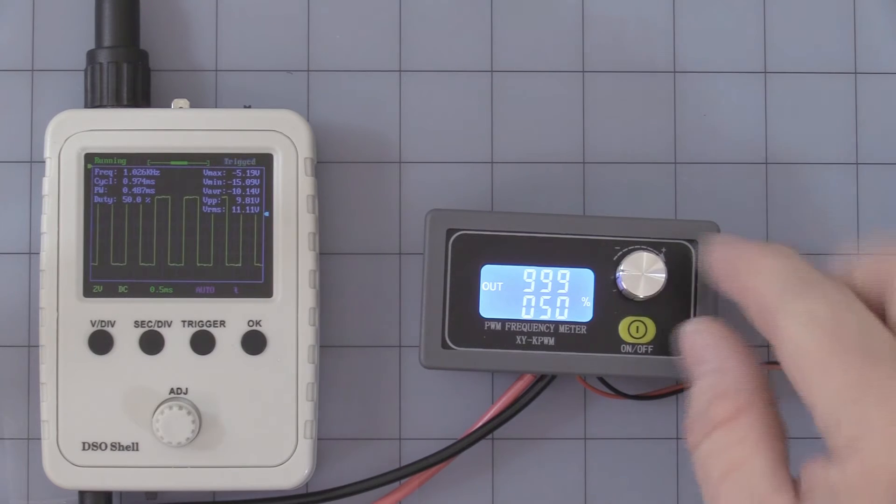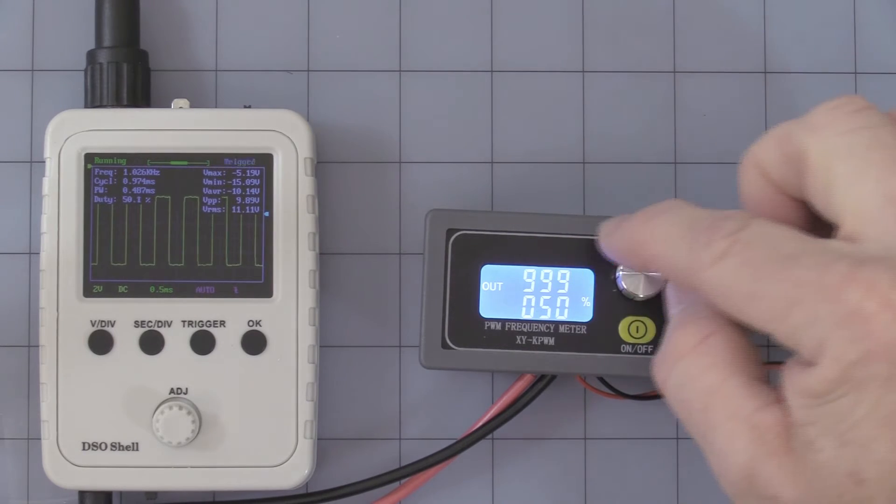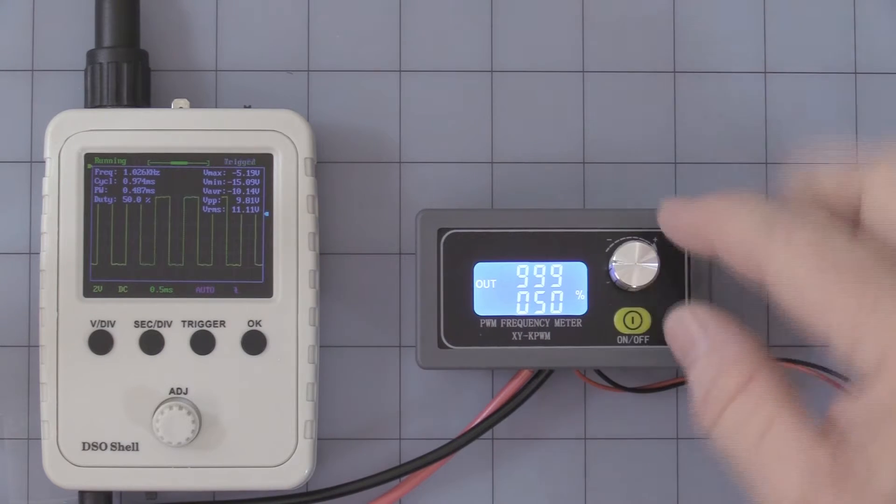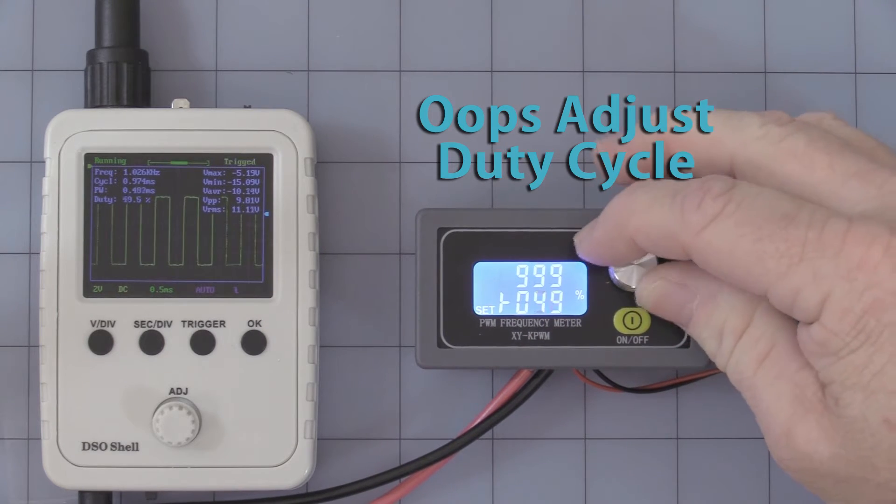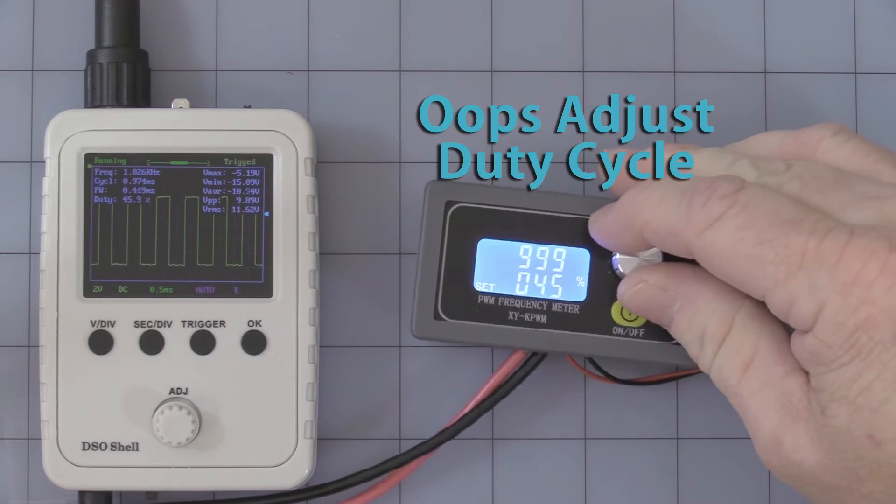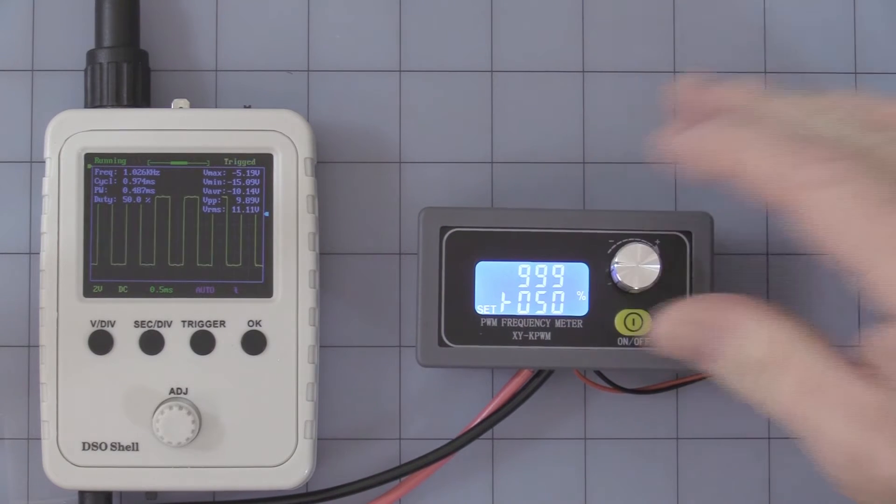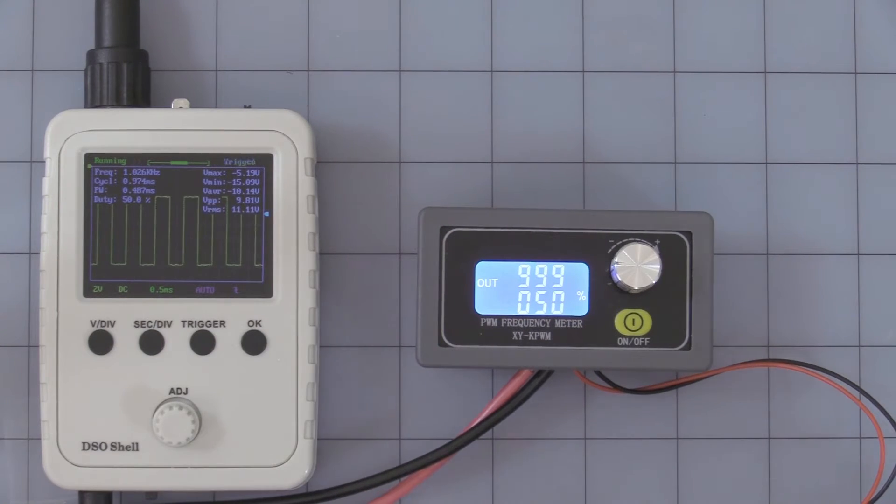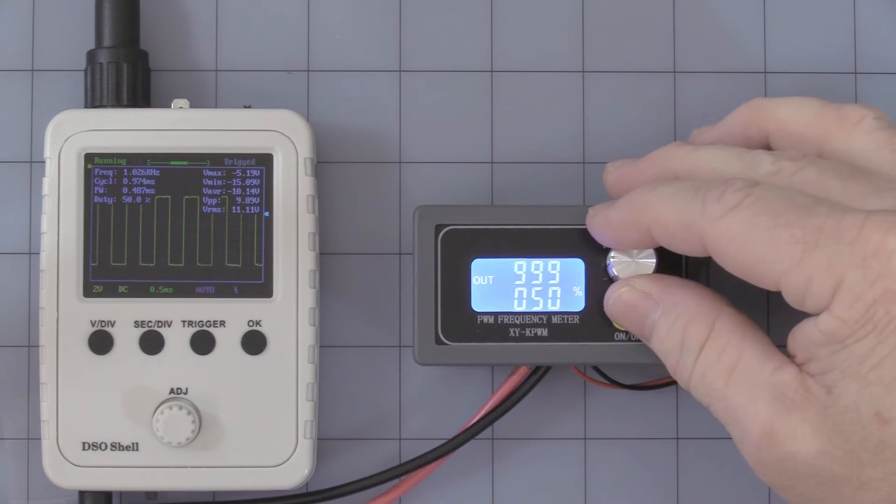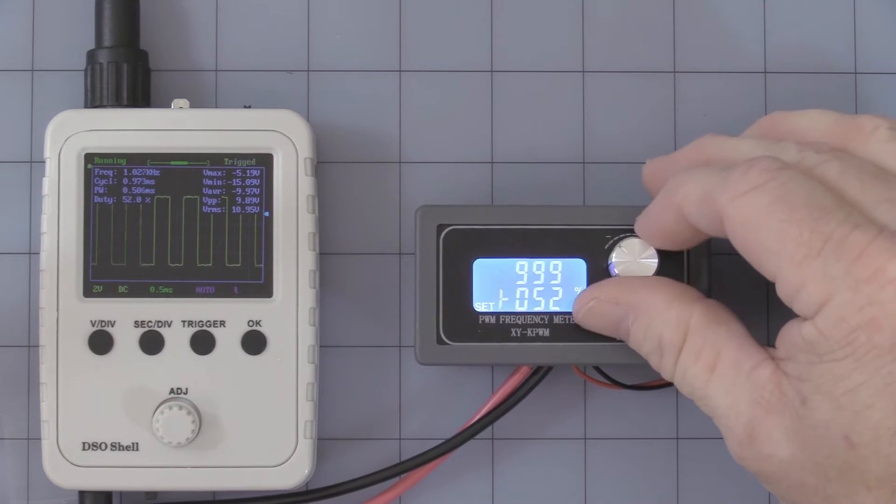When you first start adjusting the knob, there's a little minus and little plus sign, and it adjusts the frequency. Now, this is what's called the normal mode, which is simply 1% per turn, per click on the encoder wheel.